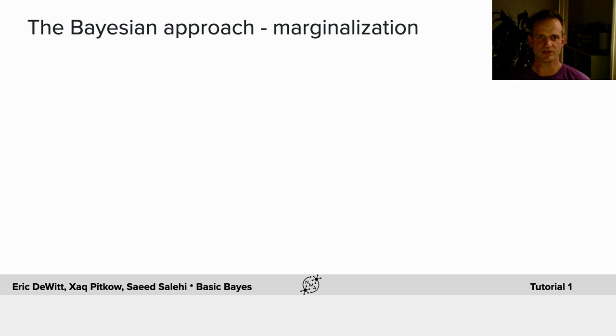Marginalization is very important for Bayesian thinking, but it's also useful in general.